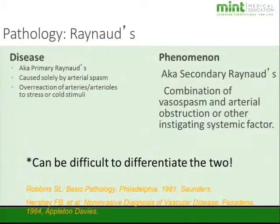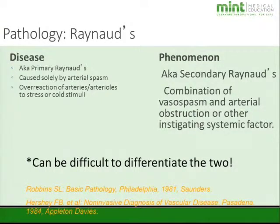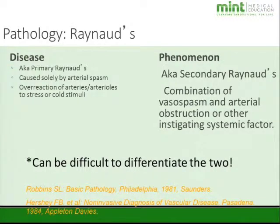A person can get nervous or cold, and their arteries overreact and spasm, causing symptoms. With Raynaud's phenomenon — also known as secondary Raynaud's — this is a combination of vasospasm and arterial obstruction or another systemic factor, such as lupus or another autoimmune disease affecting circulation. It is very difficult to differentiate the two, and clinicians must look at the whole picture of the patient's medical history.